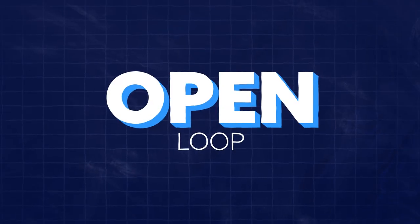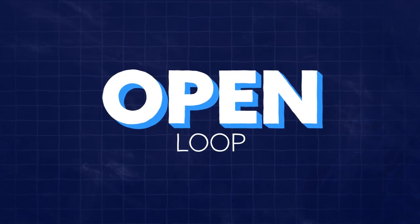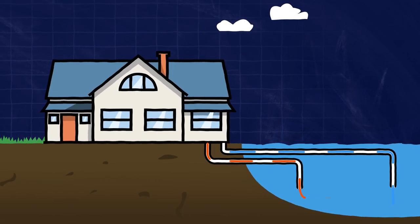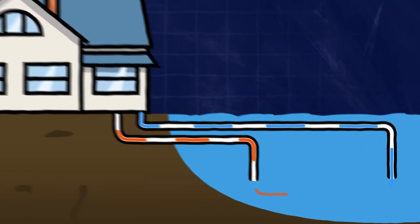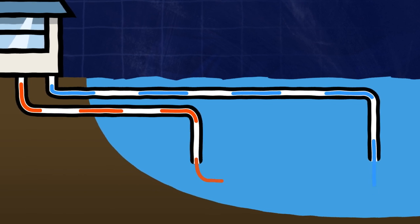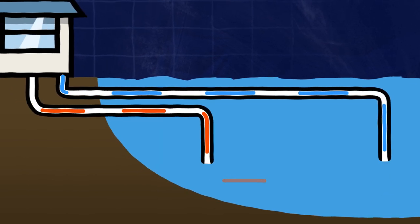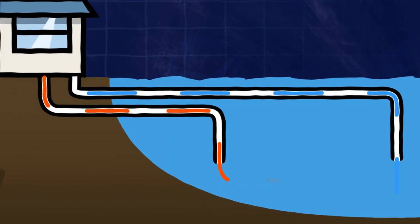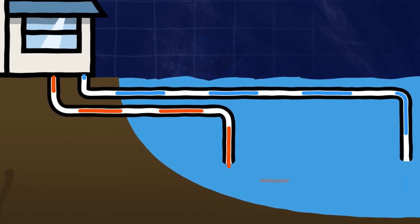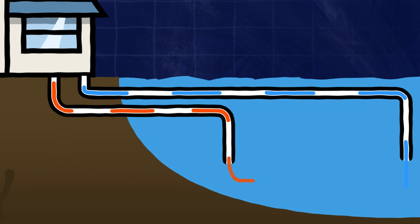In an open loop system, water is the fluid in the loop, being drawn from a well or water source. It is circulated through the heat pump and then released back into the ground or a body of water. The ambient temperature of the ground still acts on the piping, as in a closed loop.